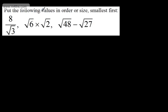In this question, we're asked to put the following values in order of size, smallest first. This was a non-calculator question. We've got 8 over root 3, root 6 times by root 2, and root 48 minus root 27.